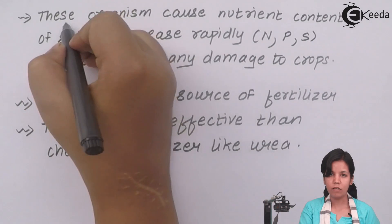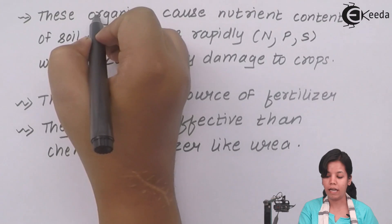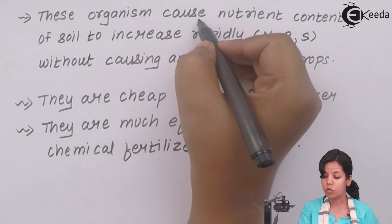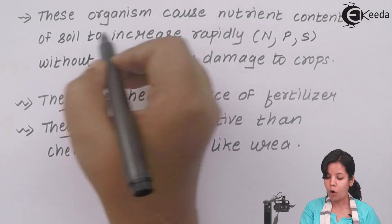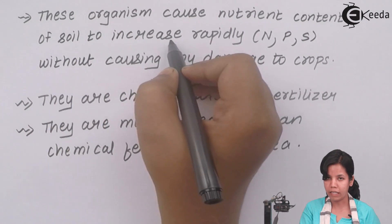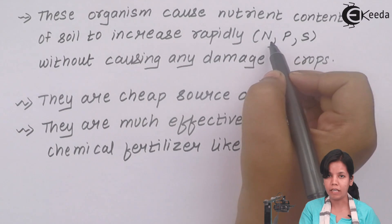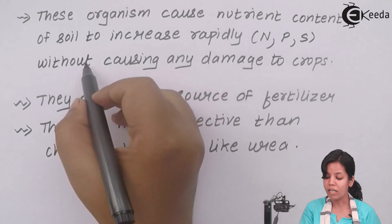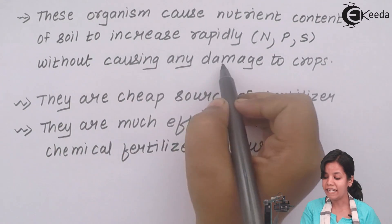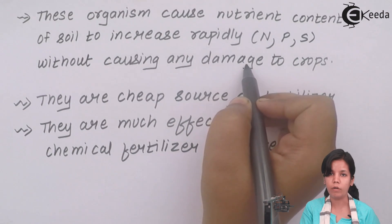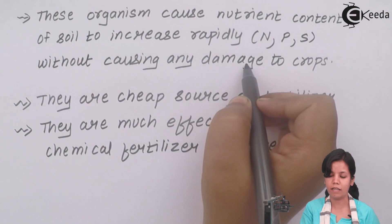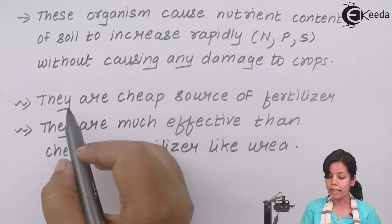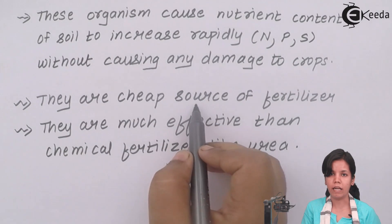The organisms present in biofertilizers cause the nutritional content of soil to increase rapidly. This could include nitrogen, phosphorus, and sulfur, without causing any damage to the crops or any side effects on the crop cycle. They are a cheap source of fertilizer.